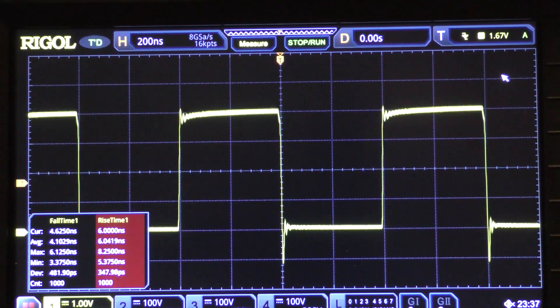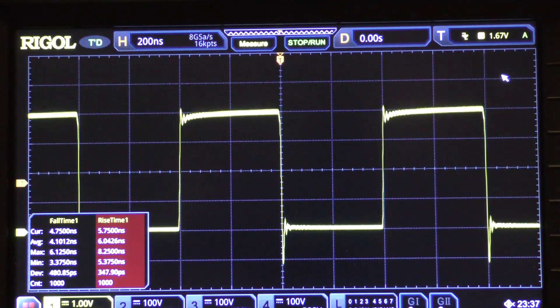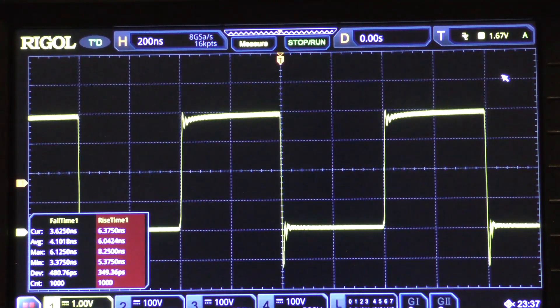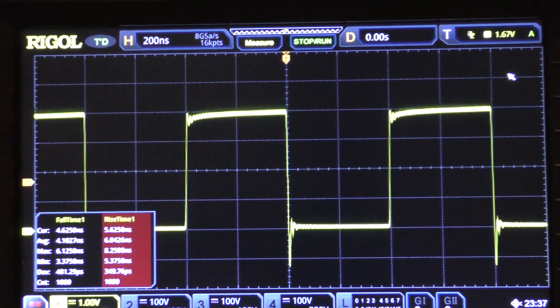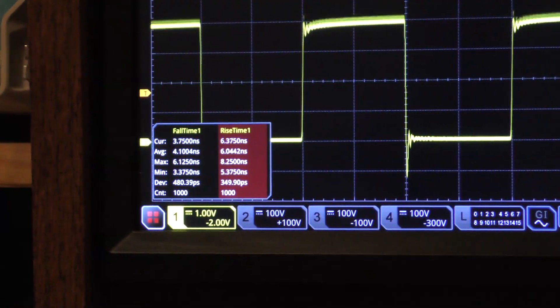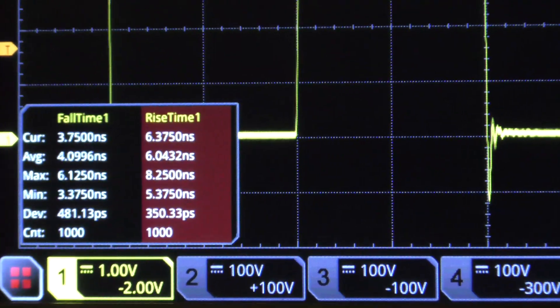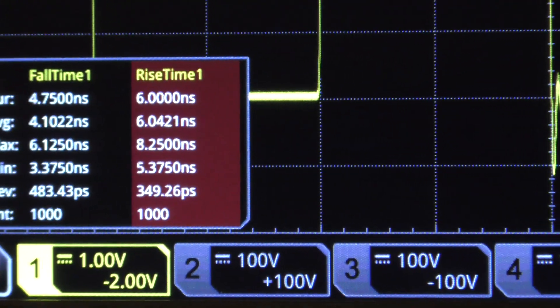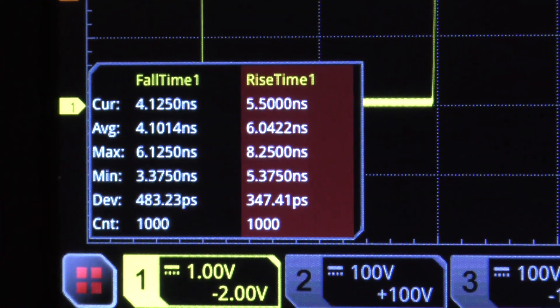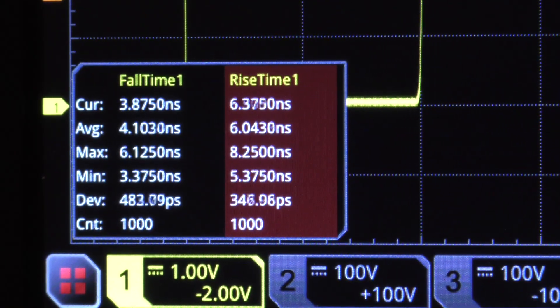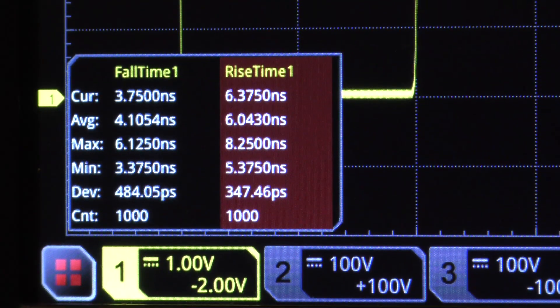I'll show you how to do this in a bit, but in the lower left hand corner you'll see a box. Let me move in on it a little bit better. That shows statistics for the rise and fall time of this signal.